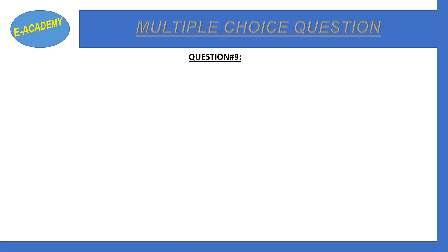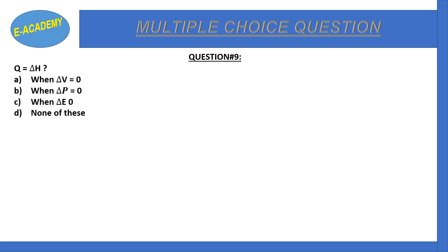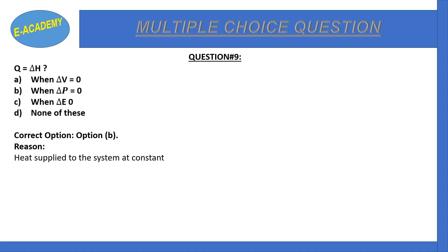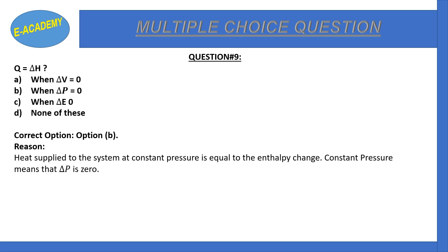Question number nine: Q is equivalent to ΔH when — ΔV = 0, ΔP = 0, ΔE = 0, or none of these? The correct option is B: when ΔP = 0. The heat supplied to a system at constant pressure is equal to the enthalpy change. Constant pressure means the change in pressure is zero, so Q equals ΔH.